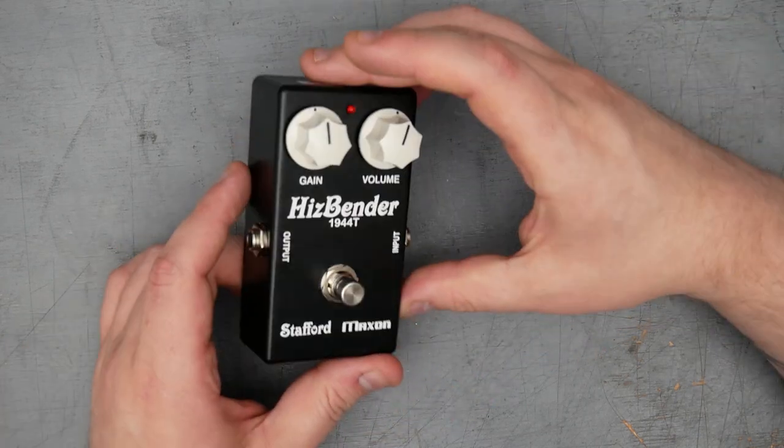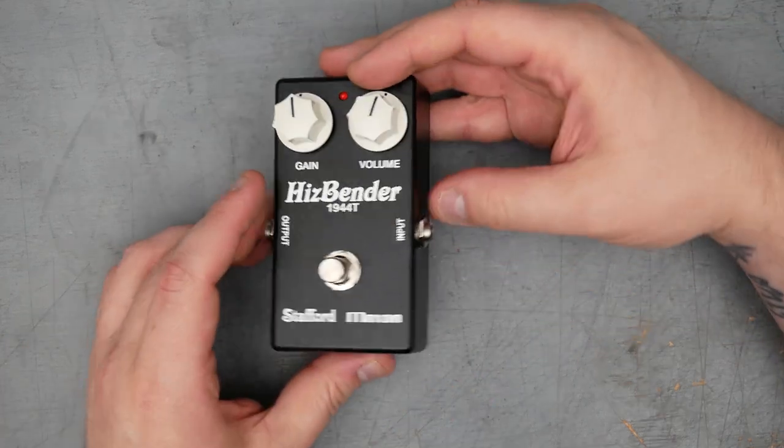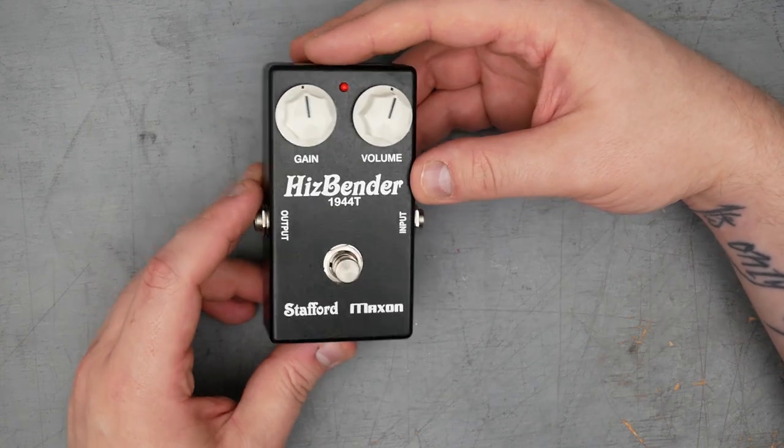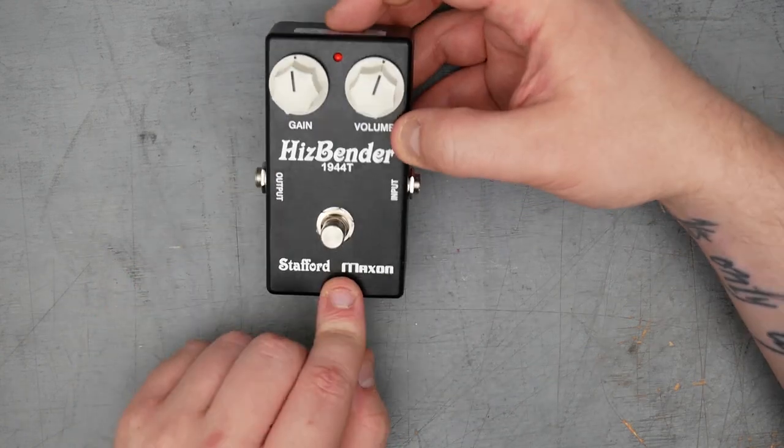As far as externals here, we have a pretty standard 1590B-esque size enclosure, maybe a little bit smaller. Stafford Maxson is written on.